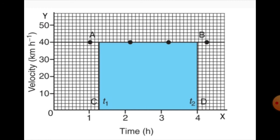This graph shows the velocity-time graph for a car moving with a uniform velocity of 40 km per hour. Time is represented on the x-axis and velocity on the y-axis. In the first hour, they move 40 km; in the second hour, again 40 km. This is the velocity-time graph for uniform velocity.